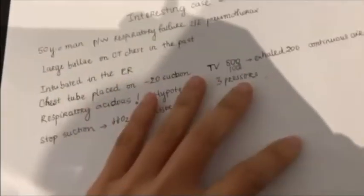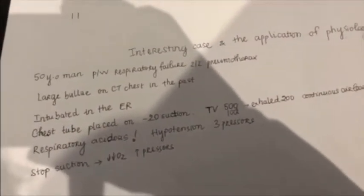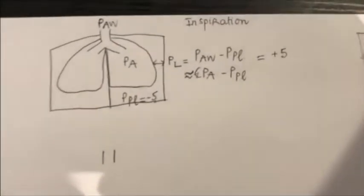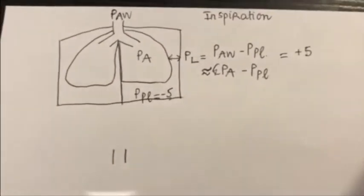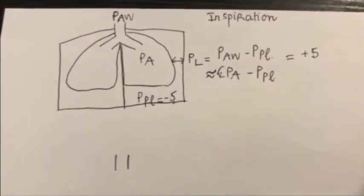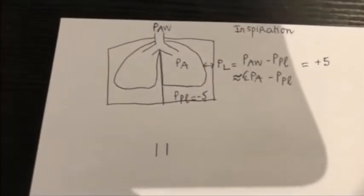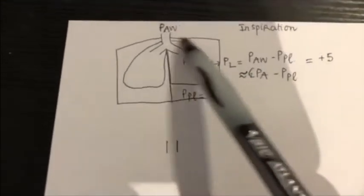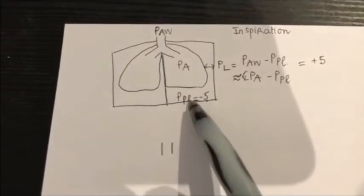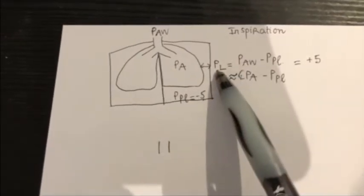So first of all, let us discuss about this case. And before we discuss about this case, let's go back to physiology of the lung. This is the kind of the picture of the lung during inspiration that I've drawn here. There's a few pressures that we have to remember. This is the airway pressure, the alveolar pressure, the pleural pressure, the transpulmonary pressure.